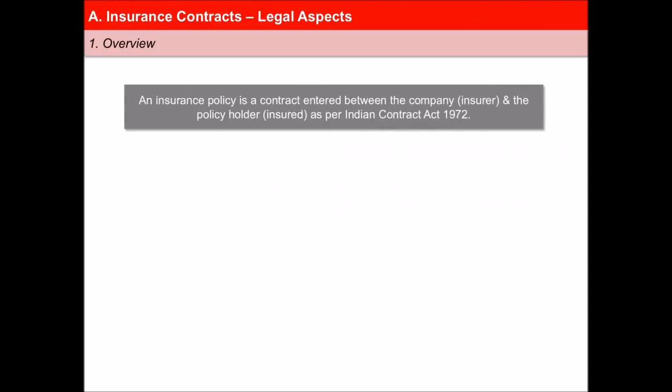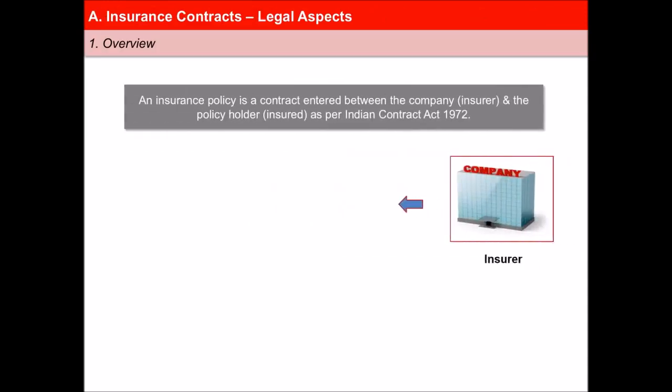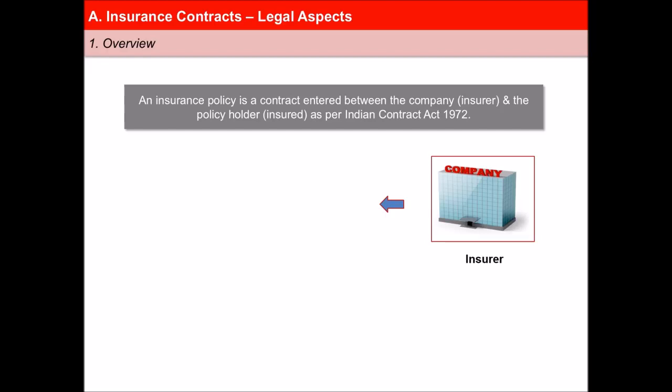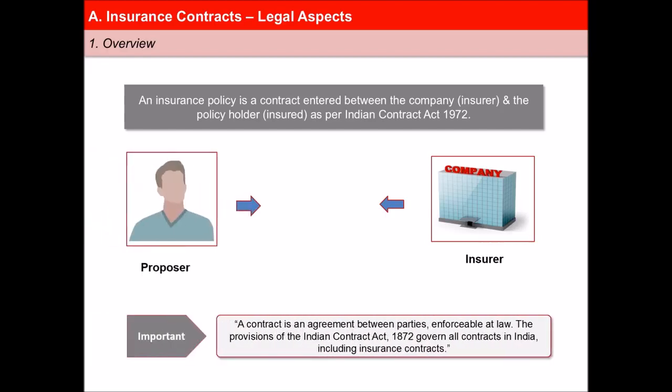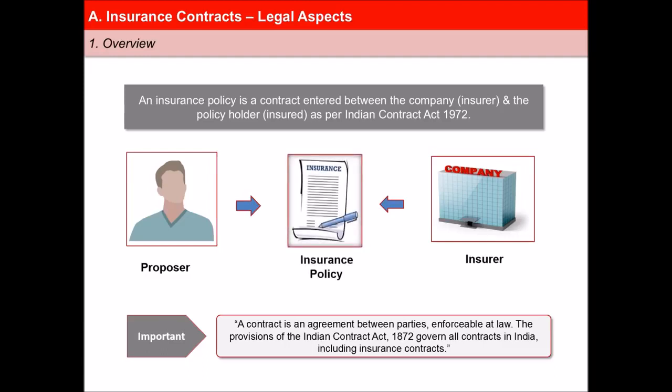An insurance contract is a contractual agreement in which the insurer agrees to provide financial protection to the proposer against certain specified risks, for a price or consideration known as the premium. The contractual agreement takes the form of an insurance policy.